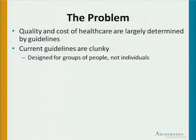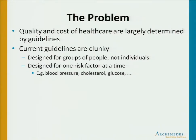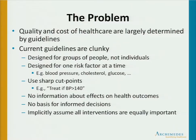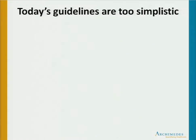Some of the issues are that they've been designed for groups of people or populations rather than individuals. They're designed one risk factor at a time — there is a blood pressure guideline, a cholesterol guideline, and a different glucose guideline. They tend to use sharp cut points; for example, the blood pressure guideline says treat if your systolic blood pressure is over 140. They don't carry any information about the effects on health outcomes and don't tell you about health outcomes, which means physicians and patients don't have the information they need to make informed decisions.